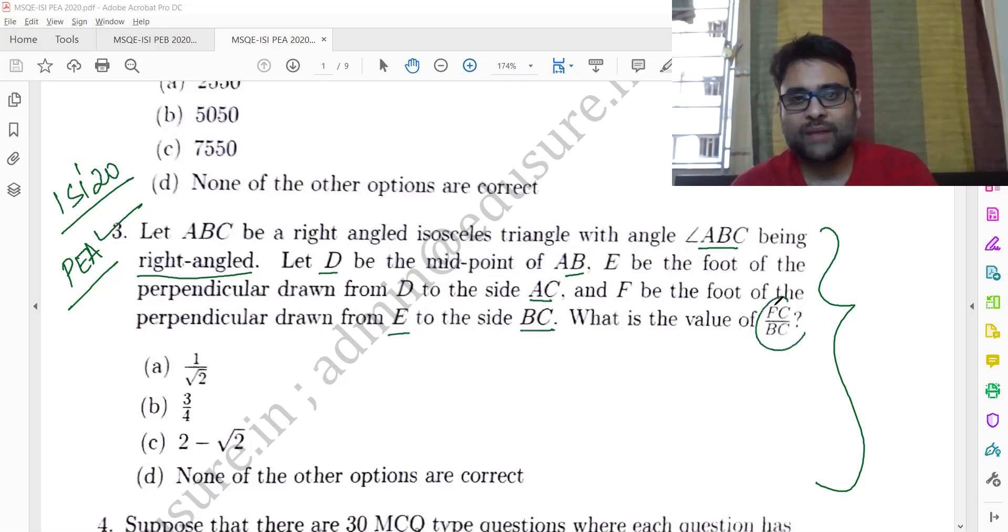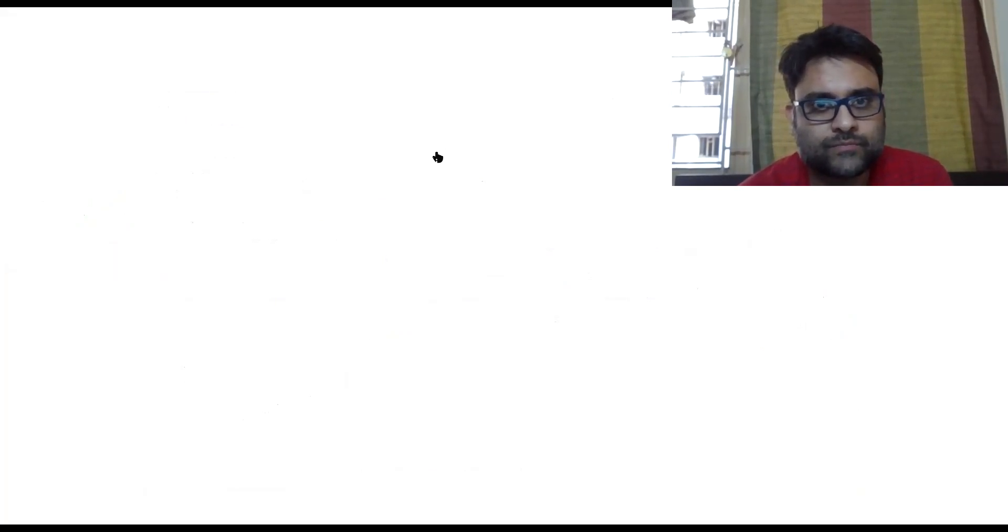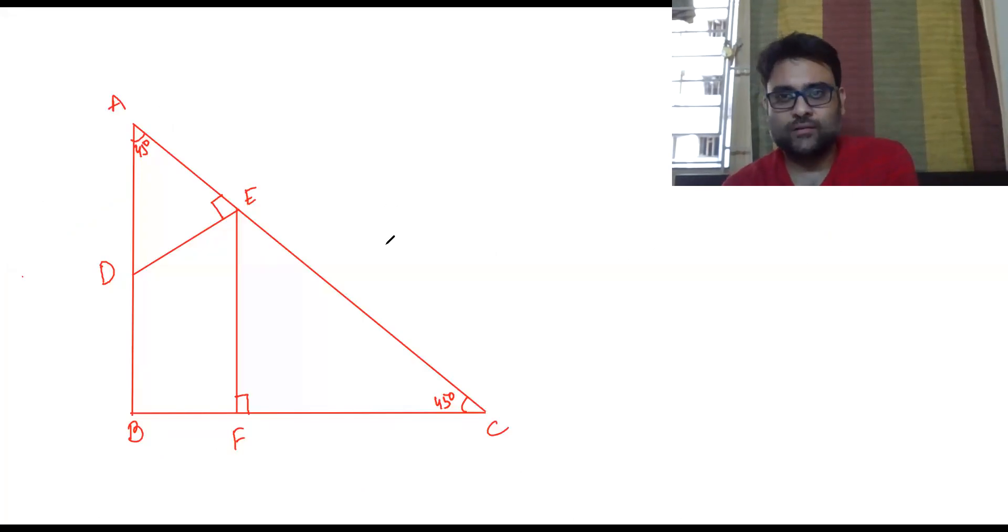What is the value of FC by BC? Let's use the whiteboard to make the triangle. So this is the information given to us: an isosceles triangle with this being the right angle.